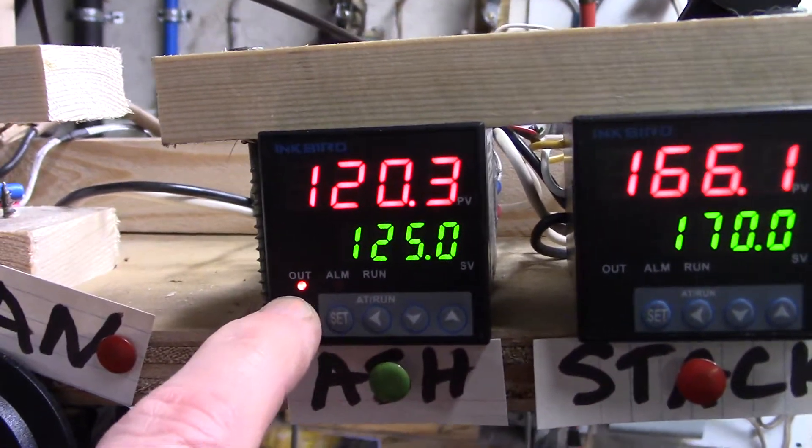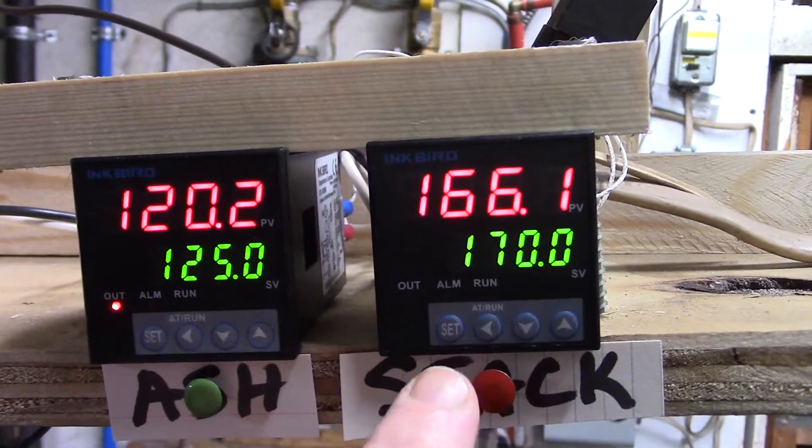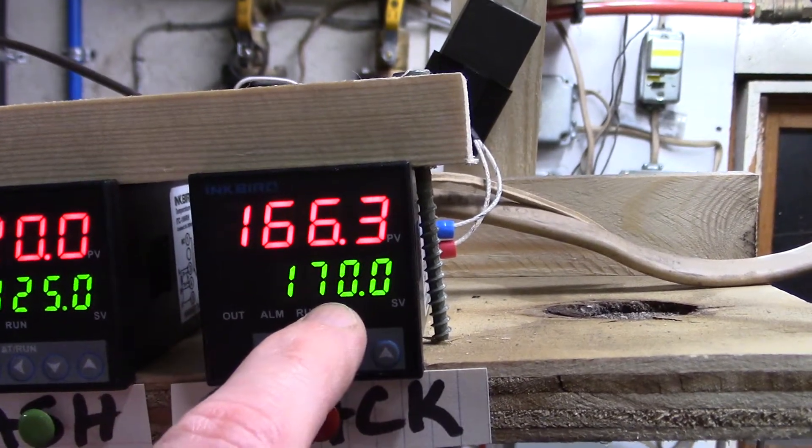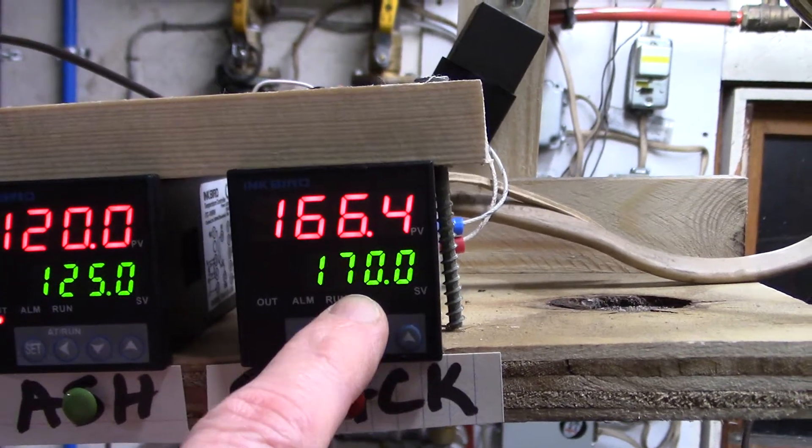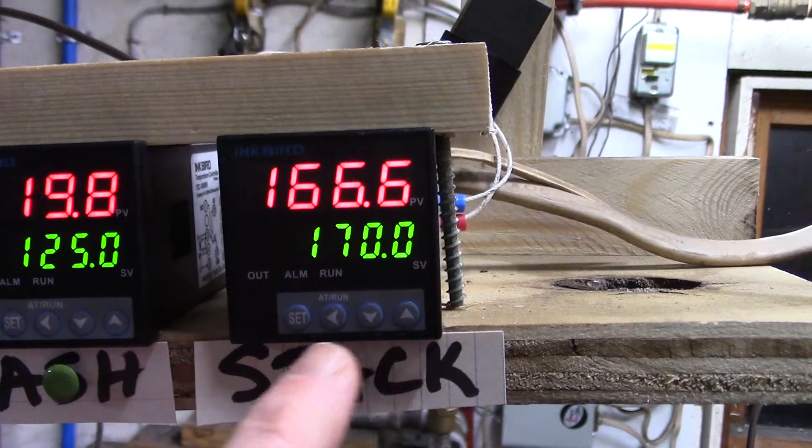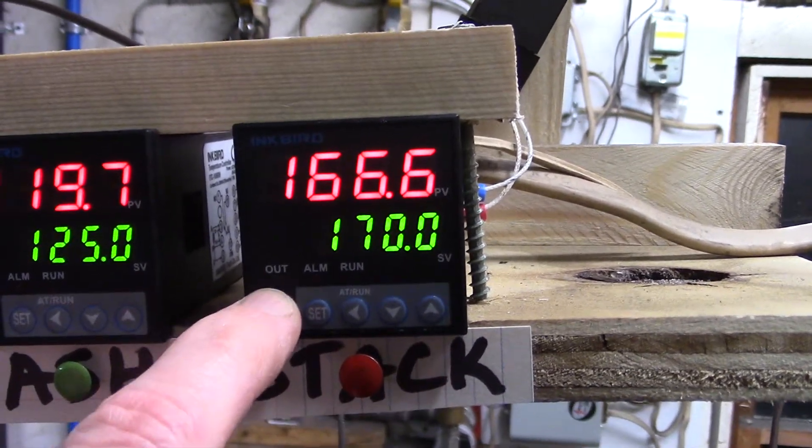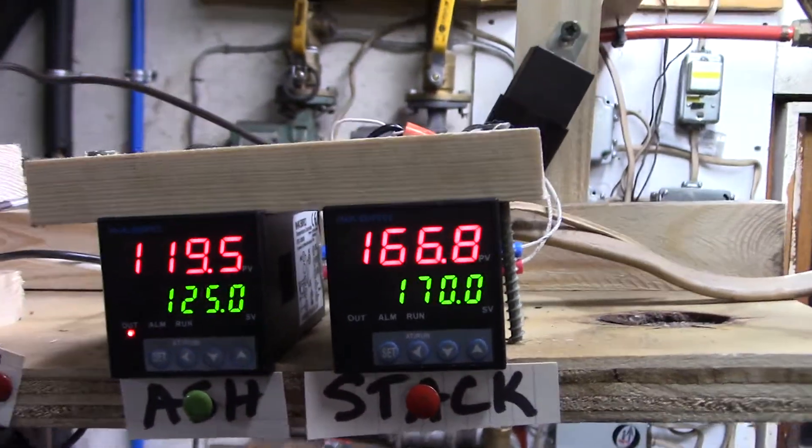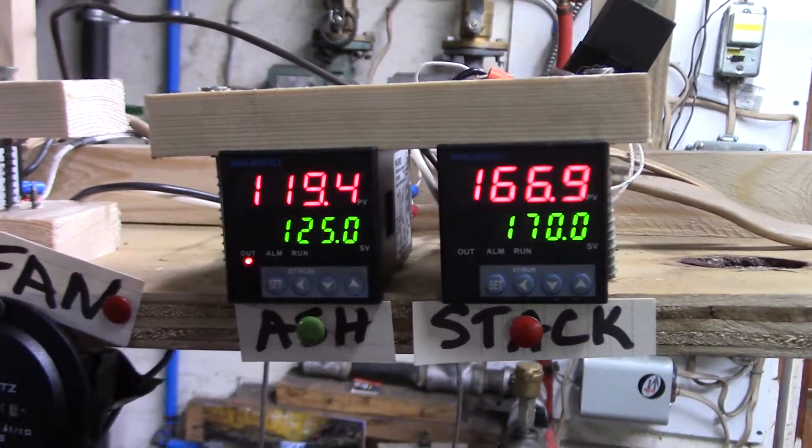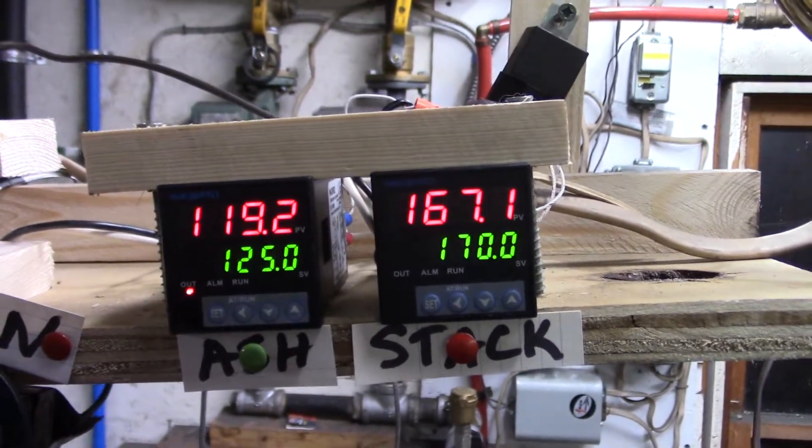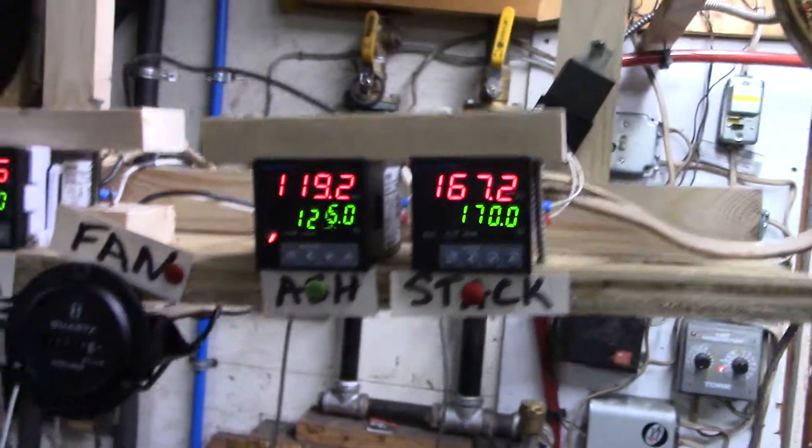The ash temperature is below the 125 degree set point so this relay is activated. These two relays are in series. The stack temperature has not reached the 170 degrees set point yet but it will in a few seconds, and once it does this little red light will come on, the relay will activate, and then the auger will start turning and the solenoid will activate.